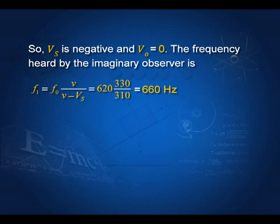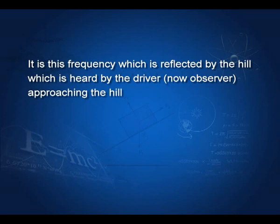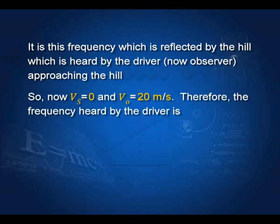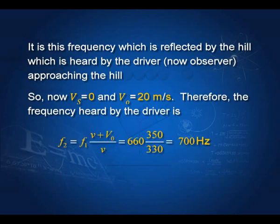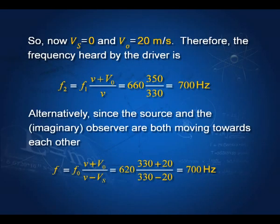The frequency F₁ reflected by the hill is now heard by the driver. This imaginary observer becomes the source, and the driver is now the observer approaching the hill. Vs is zero, V₀ is positive (driver moving towards source at 20 m/s), so F₂ equals F₁ times (V plus V₀) by V, giving 700 Hz. You could also use the single formula F equal to F₀ times (V plus V₀) by (V minus Vs) directly.